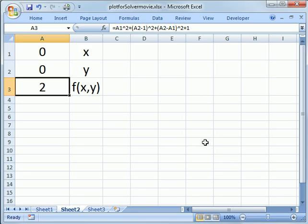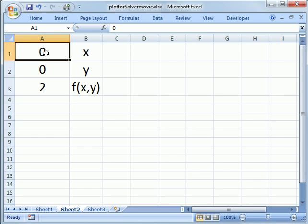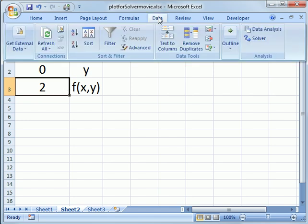So here's our sheet. I've got a guess for X in cell A1, a guess for Y in cell A2, and then I evaluate the function using those values. And for 0, 0, I get 2 for our F of X and Y. So now I go to the Data tab, click Solver.